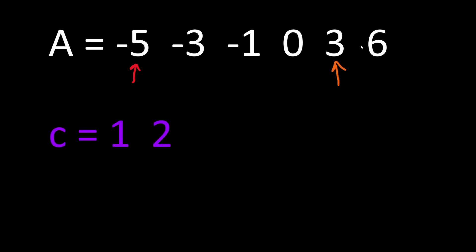In this case we are going to shift our interest to the element that comes just before the greater absolute value. So we decrease our pointer to the number that comes just before 6, which is number 3.